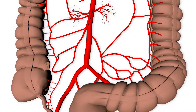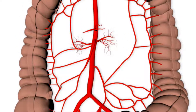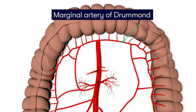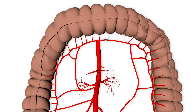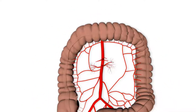Rather than being two distinct arterial systems, the blood supply to the midgut and hindgut communicate via the marginal artery of Drummond. This is a continuous arterial arcade that runs parallel with the inner border of the colon and provides an anastomosis between the terminal branches from the superior and inferior mesenteric arteries.